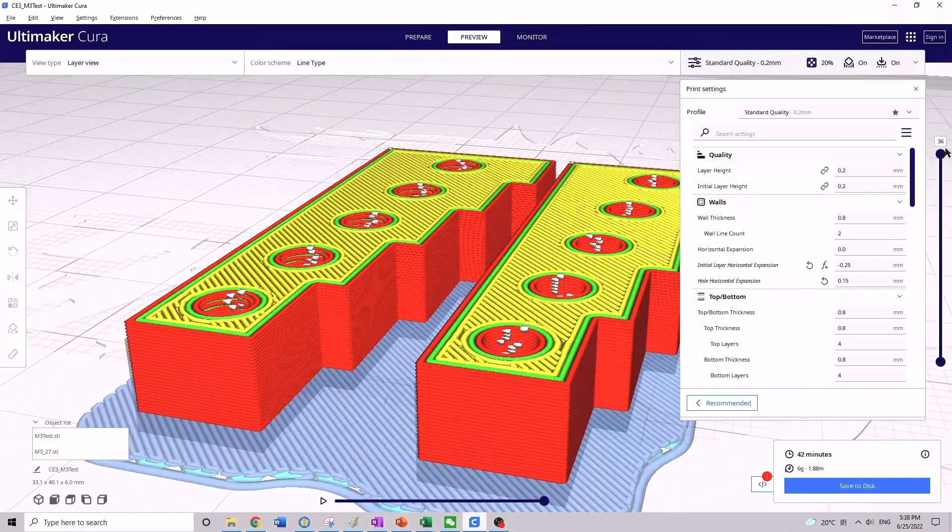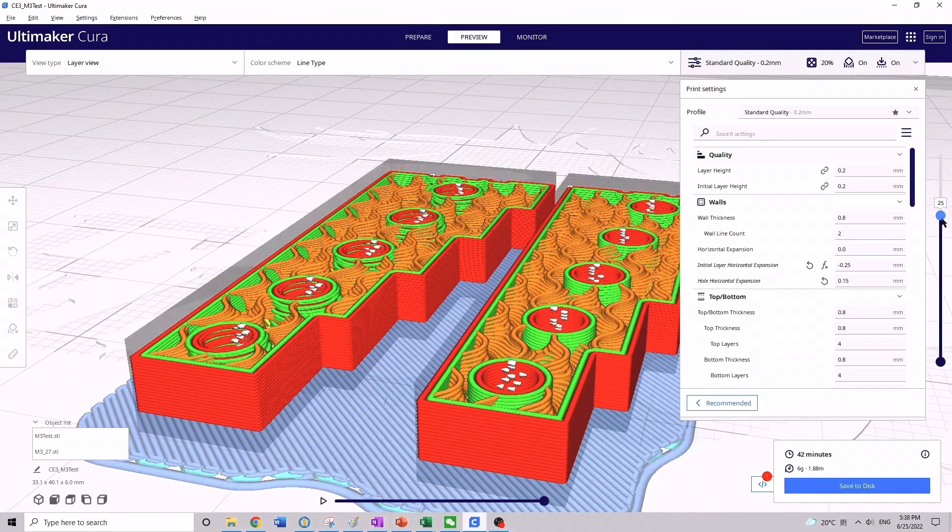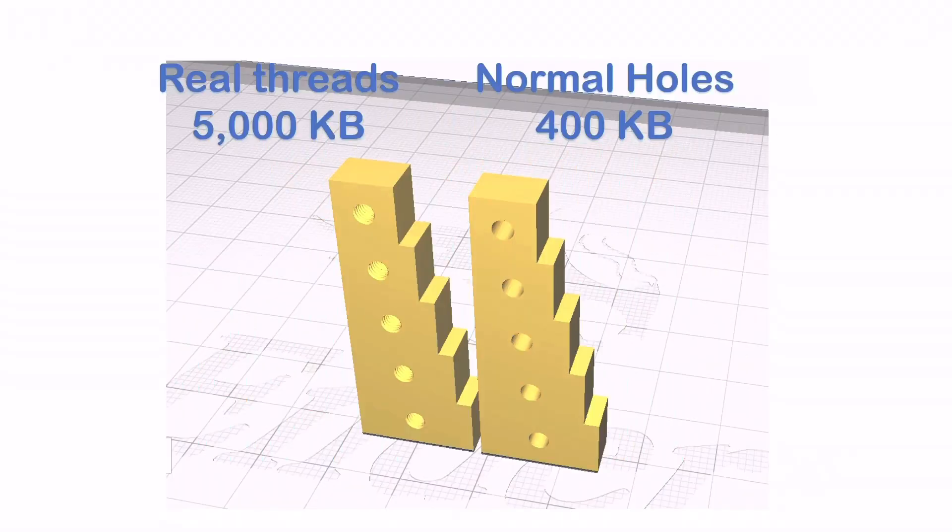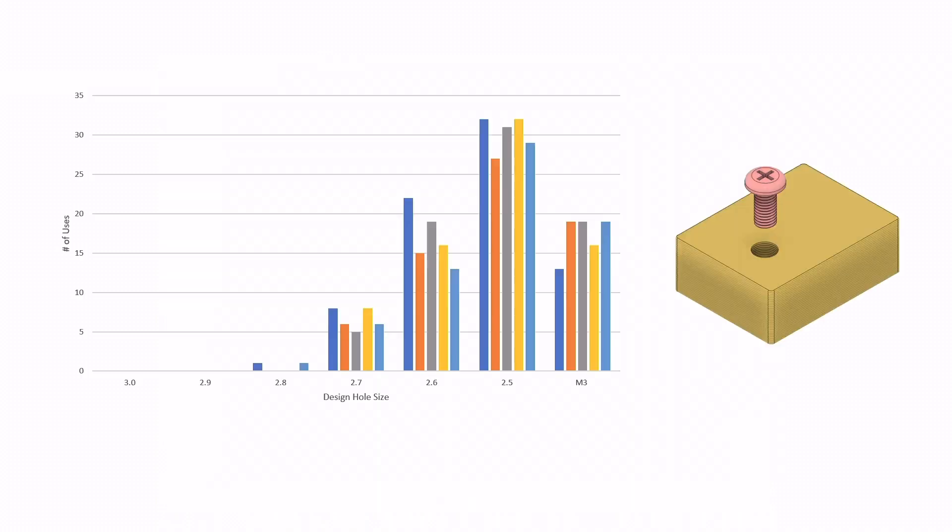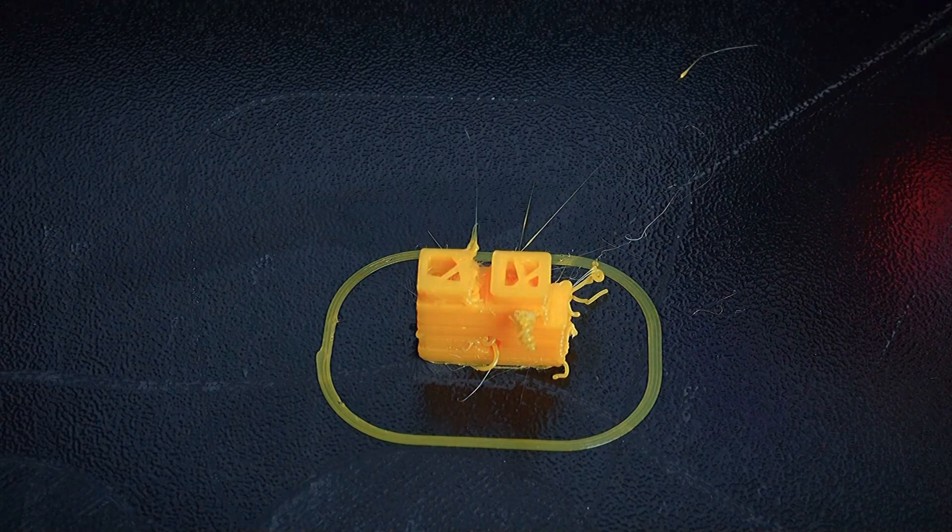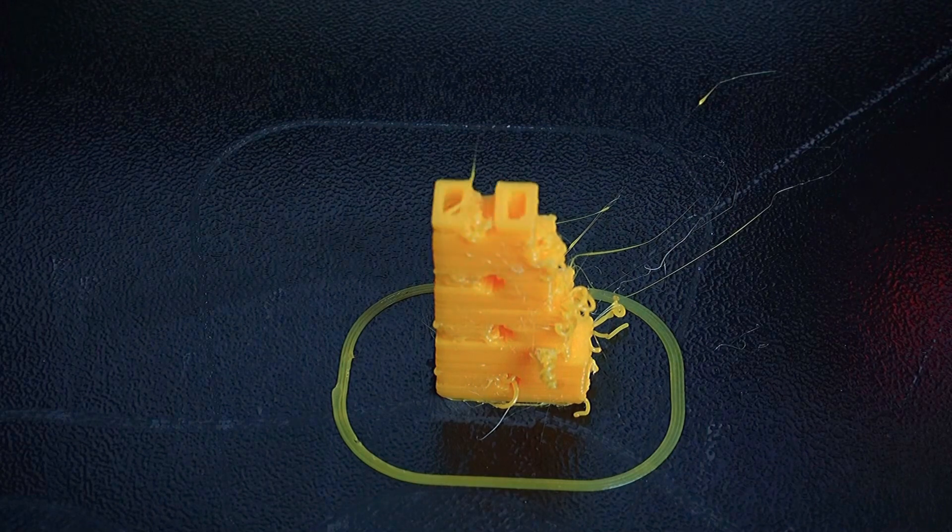Now let's do one more test. The part on the left, I've actually modeled in the M3 threads. You can see that as I roll down the model layers. I do have to say modeling in the threads made the model much larger, about 5,000 kilobytes instead of normally around 400 kilobytes. Looking at the results of the M3 threaded hole, it was pretty similar to the 2.6 millimeter hole, about 18 uses on average, except this time it was a lot easier to get the screw started and thread into the part. So now let's switch over to printing the part vertically and screwing into the layers.